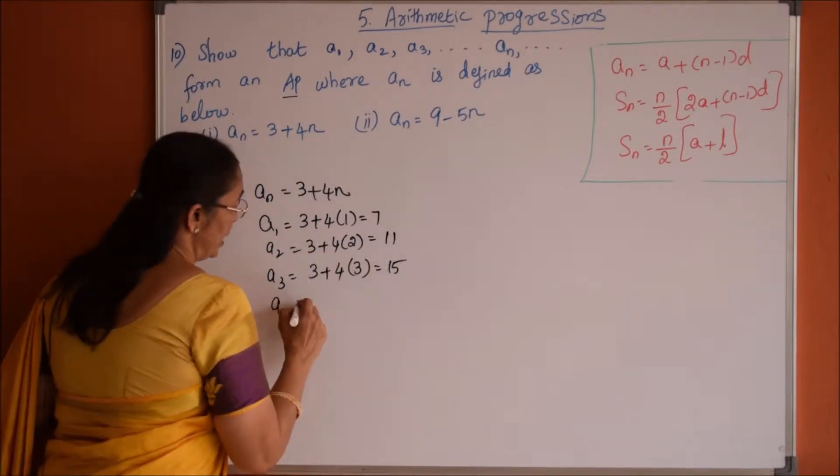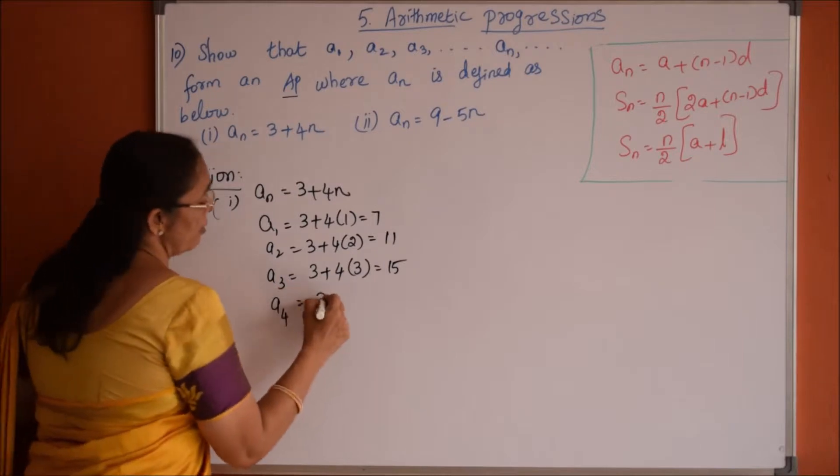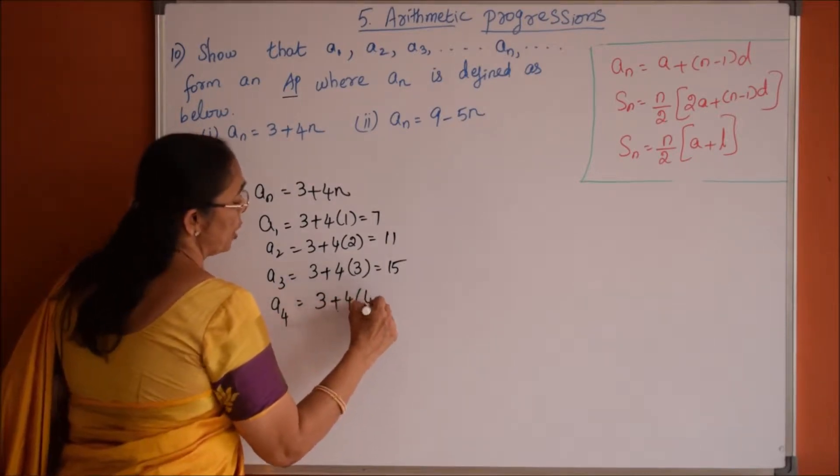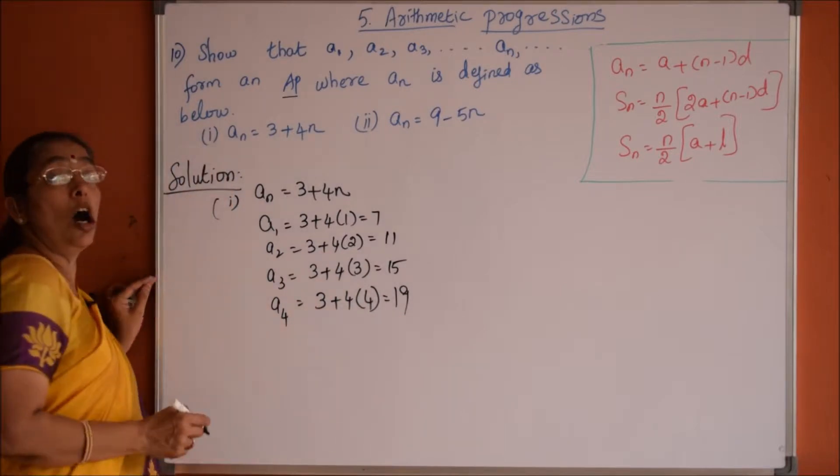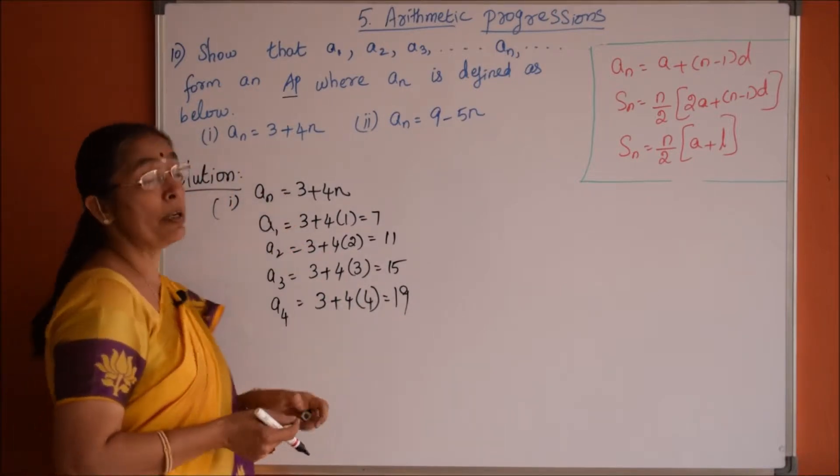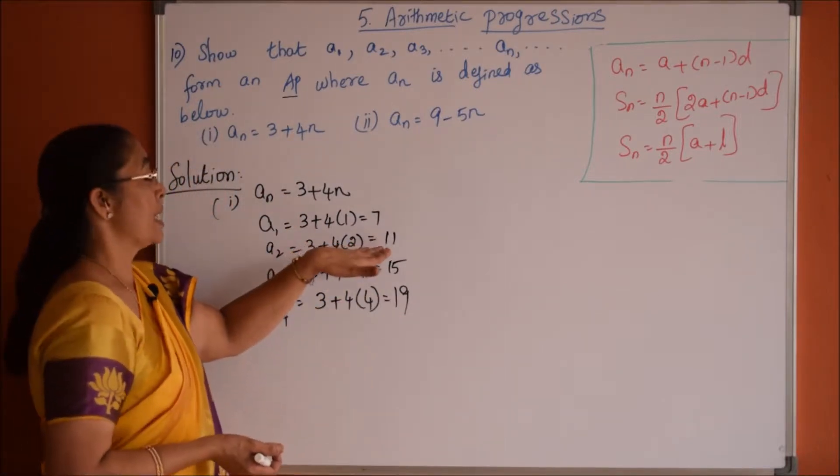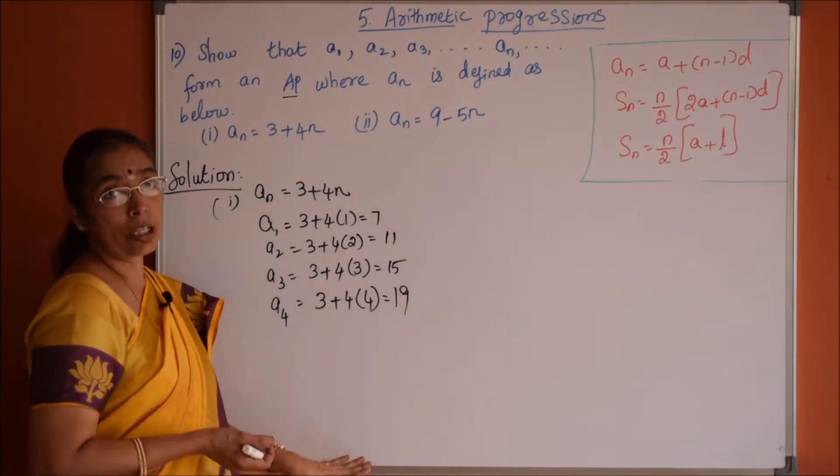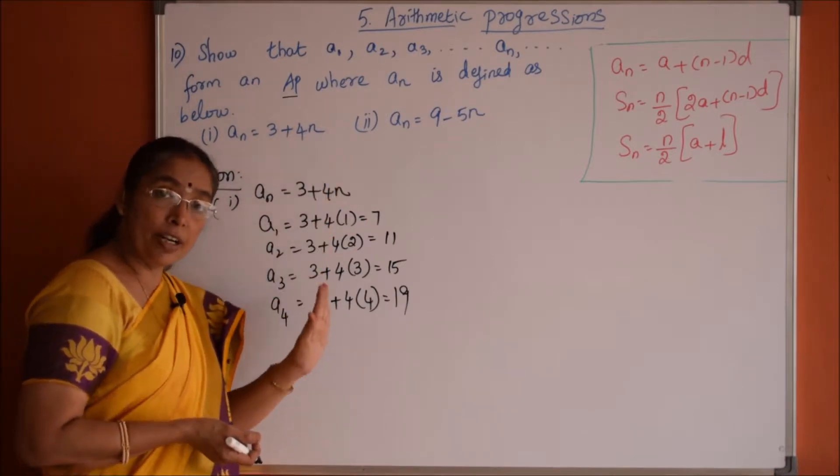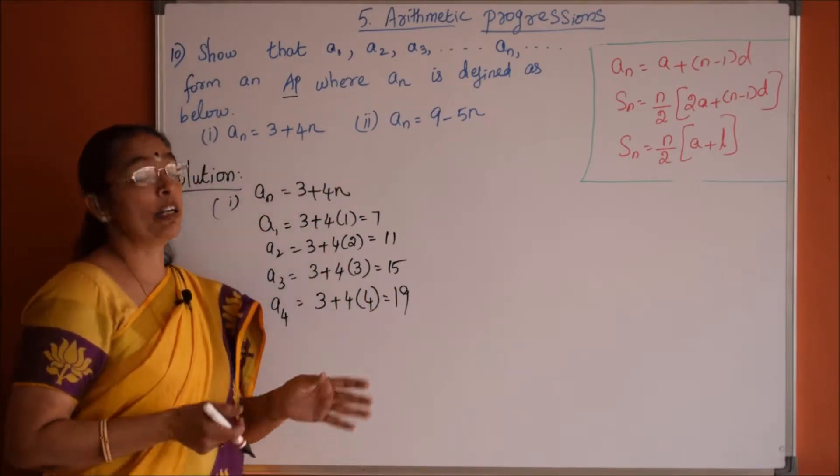So one more value we will find out. Therefore a4 is equal to 3 plus 4, 4s are 4 into 4, 16 plus 3, 19. How to check whether the given list of numbers form an AP or not? Second term minus first term must be equal to third term minus second term, or the given list of numbers must have the common difference.